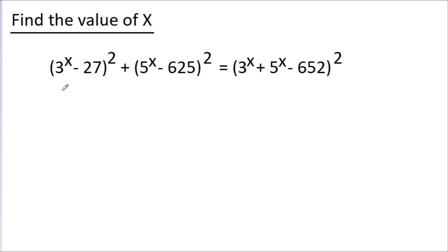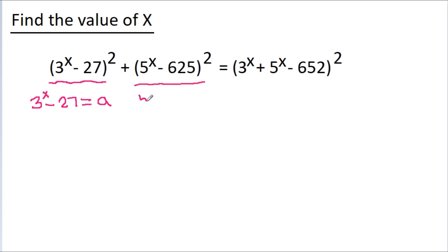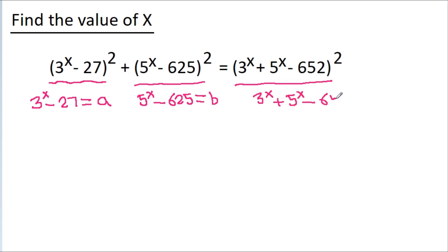So here, if we take a = 3 to the power x minus 27, and b = 5 to the power x minus 625, then 3 to the power x plus 5 to the power x minus 652 will be a plus b.